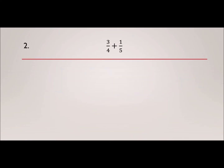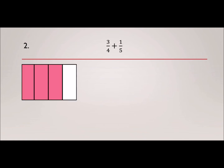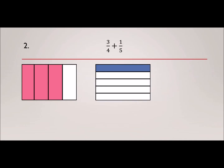Let's go ahead and try another problem: 3/4 plus 1/5. On the first box, the whole is 4, so I have four boxes, and of the four, three are shaded because the numerator is 3. On the second box, the whole is 5, but of the five boxes, only one is shaded. We still have a problem because 4 and 5 are not the same amount.